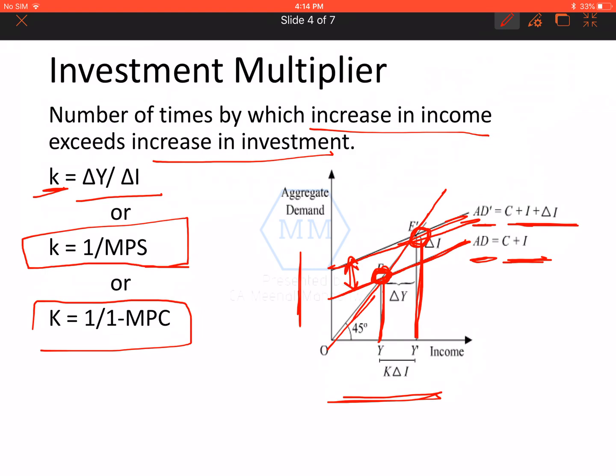Investment had this much increase, but because of this, my income had much more increase. This is multiplier effect. A small increase in investment results into multiple times increase in GDP.